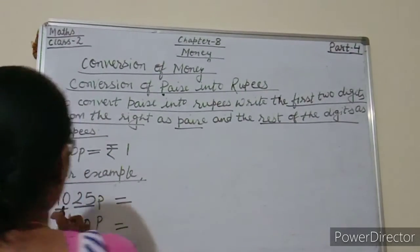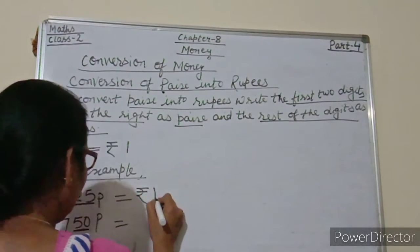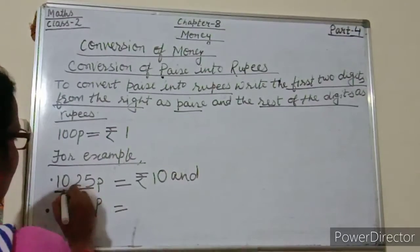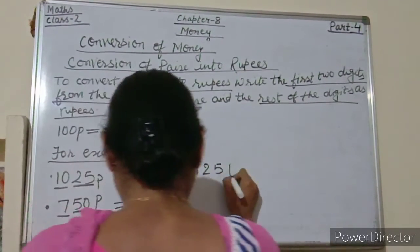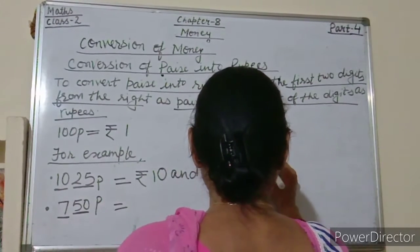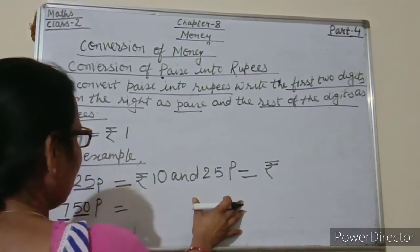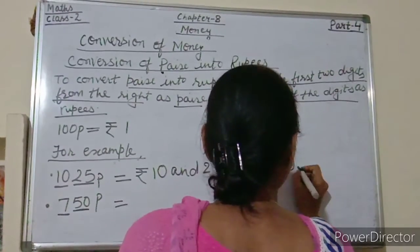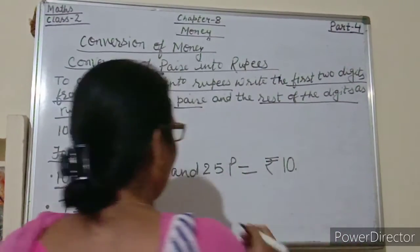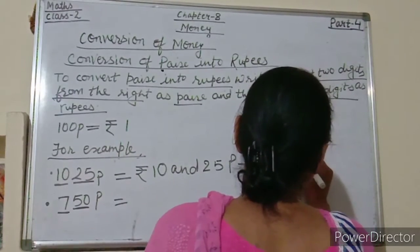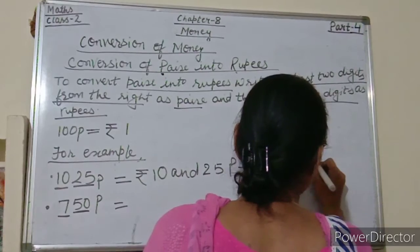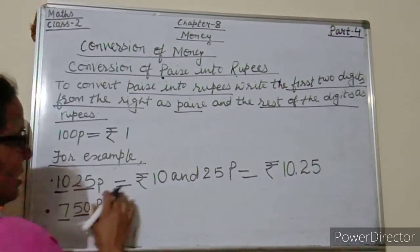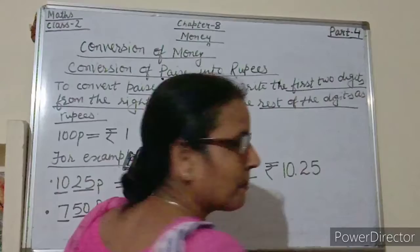So here, rupees 10 and how many paise? 25 paise. We will write 10 rupees and put a dot to separate paise. So 1025 paise is equal to 10 rupees and 25 paise.